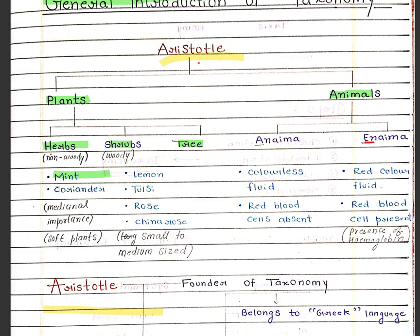Examples of herbs are mint and coriander. They have medicinal importance and are soft plants. Shrub examples are lemon, tulsi, rose, and china rose. They are small to medium in size, and trees are large-sized plants.